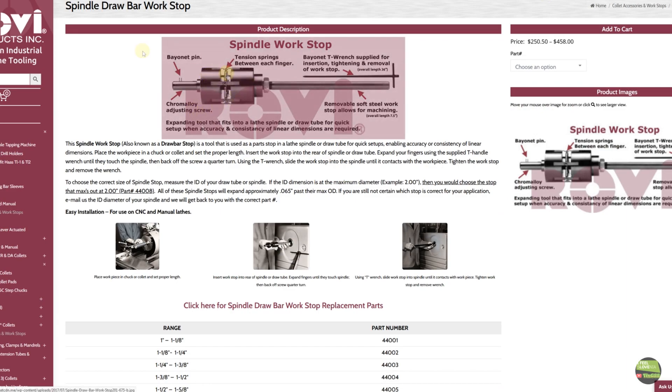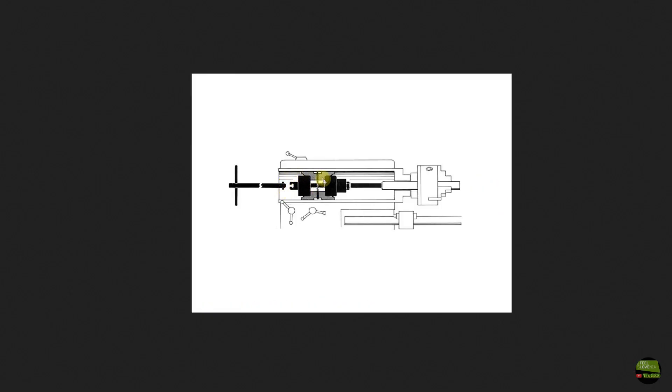There are many types of spindle blockers. Here we can see the most common one. We put the spindle blocker into the spindle bore from the backside and tighten the position with a special tool, so it extends in the middle and holds the position.